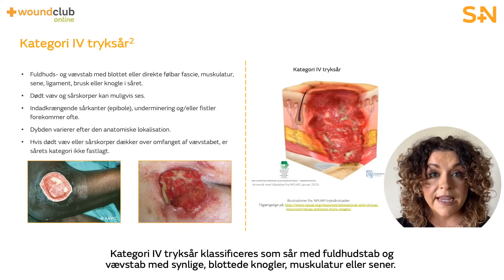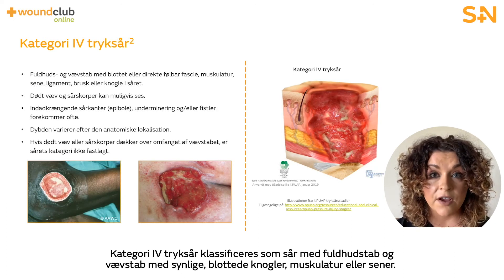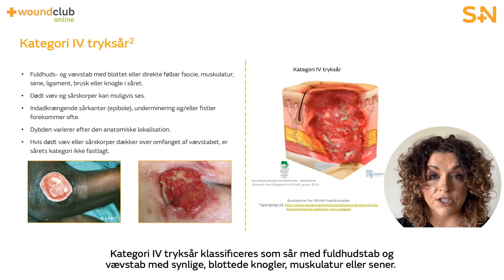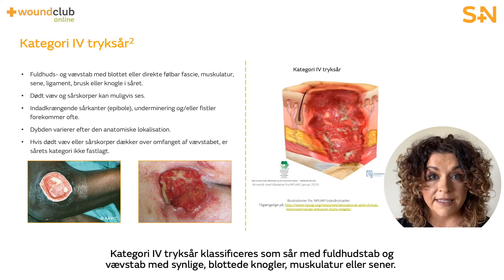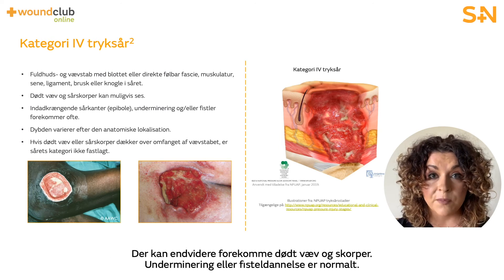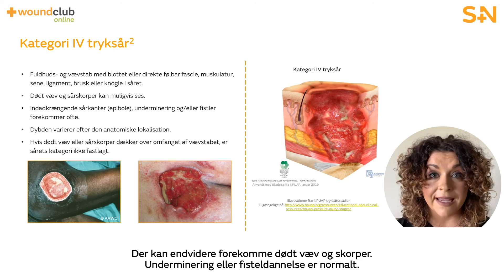Category four pressure ulcers are classified as full thickness skin and tissue loss with visible bone, muscle, or tendon. There may also be slough and eschar present, and undermining or tunnelling is common.